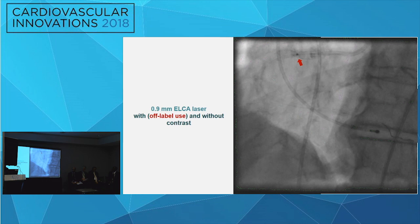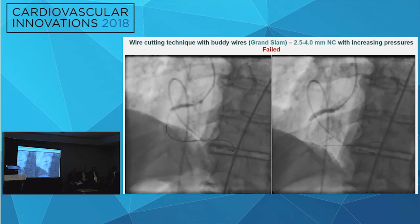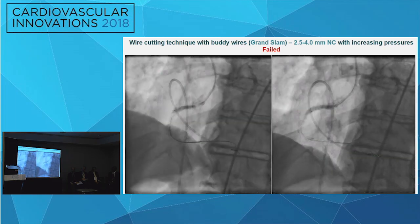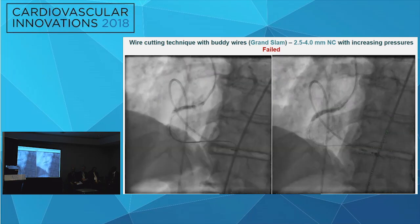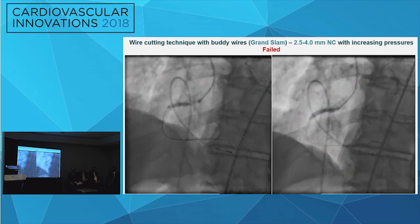We used an upfront laser technique with and without contrast — simultaneous contrast injection is an off-label use, however it is a feasible and excellent option for dilating under-expanded stents or previously implanted stents with undilatable lesions. This failed, and our next approach was delivering multiple buddy wires to the distal lumen and using the wire cutting effect, inflating balloons with 2.5 to 4.0 millimeter diameter at increasing pressures. These attempts also failed.